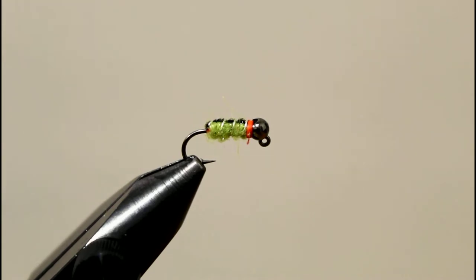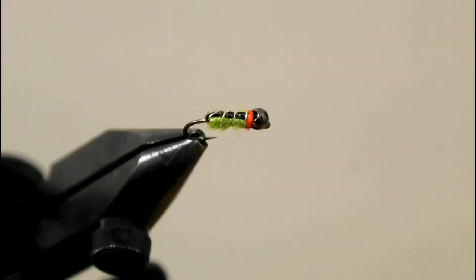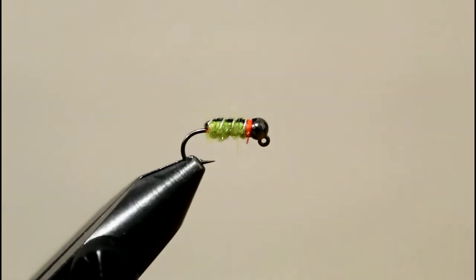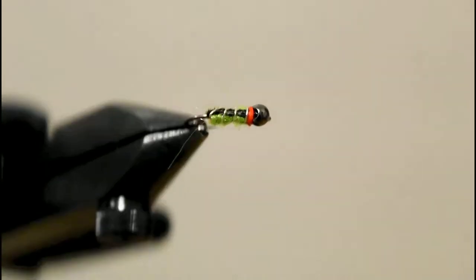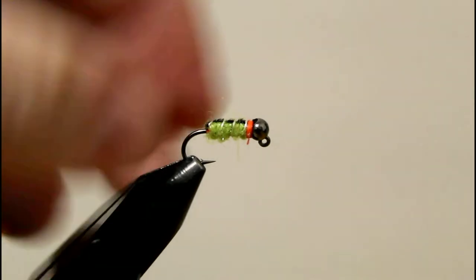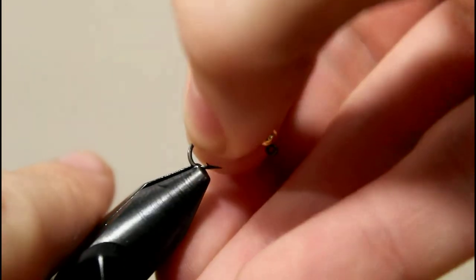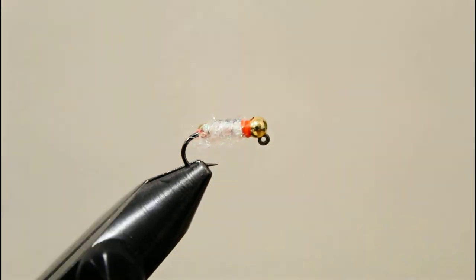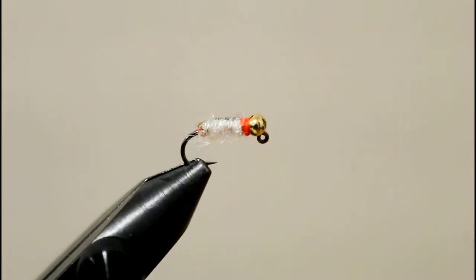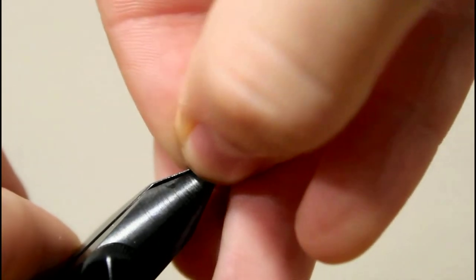Today I'll be tying the rock crawler caddis, a euro nymphing fly shown to me by my buddy Will. It works well as a dropper or anchor fly. There's a couple different variations—this is a caddis variation. I've also tied it in the scud variation which almost acts as a waltz worm. It's a very versatile fly and works very well in most of the rivers around me.